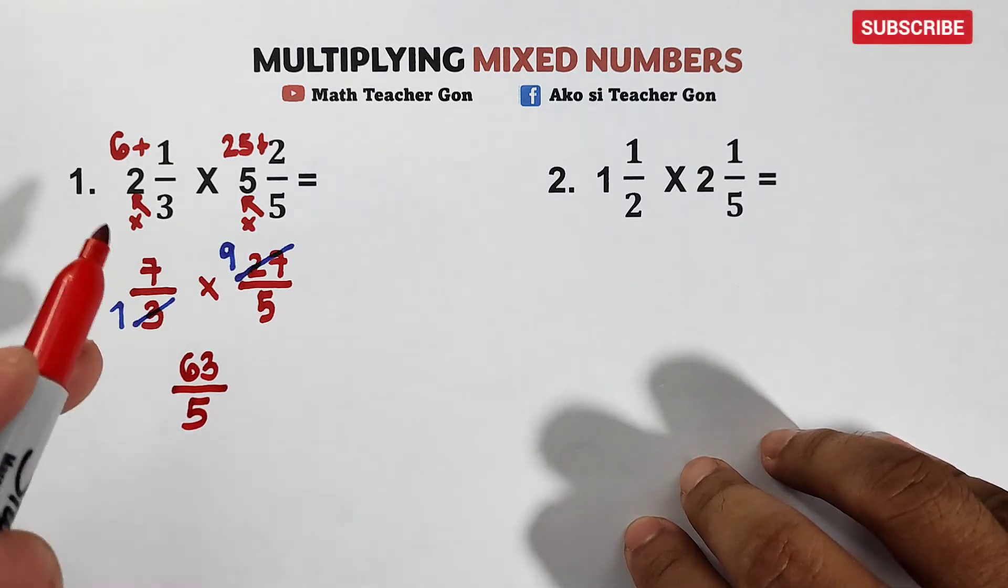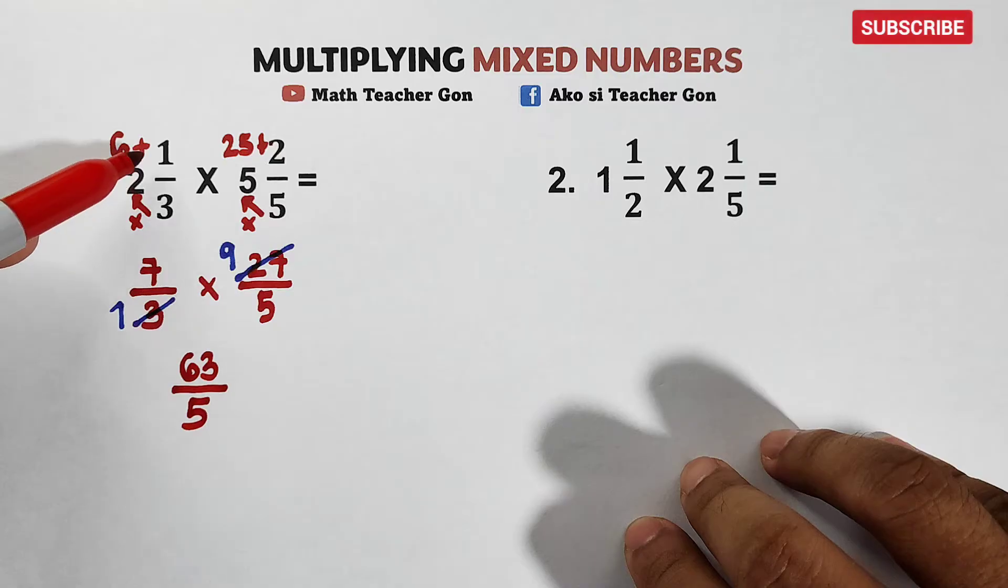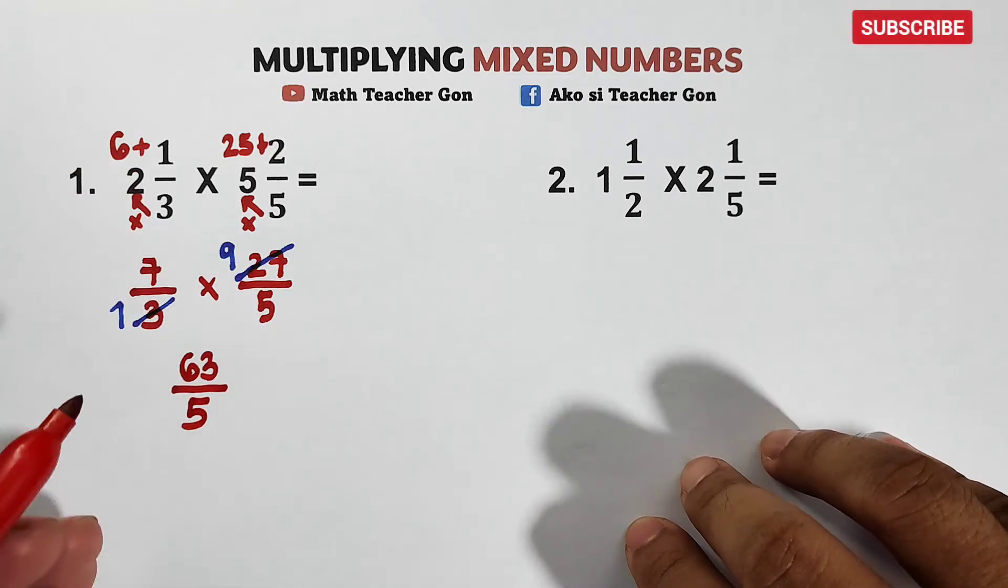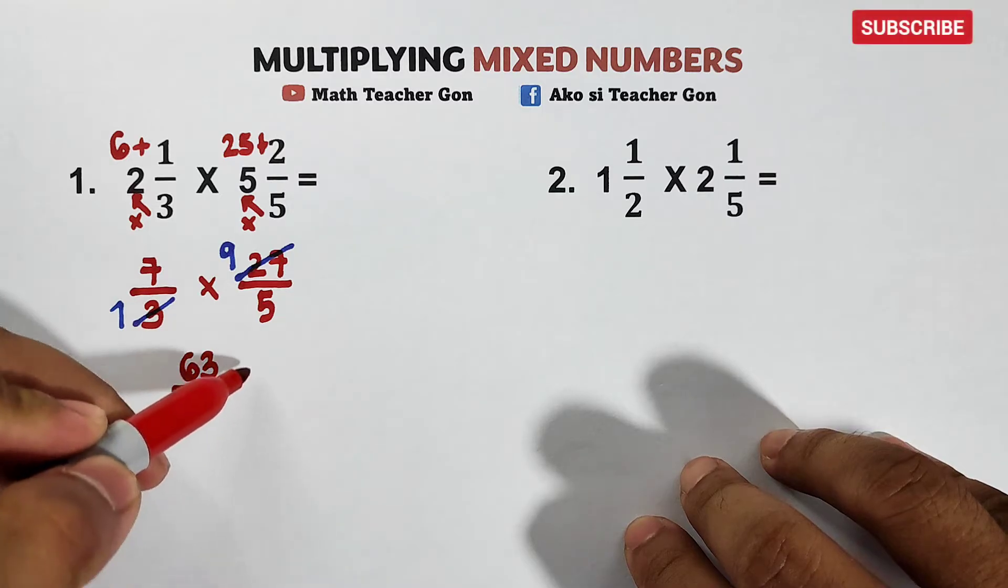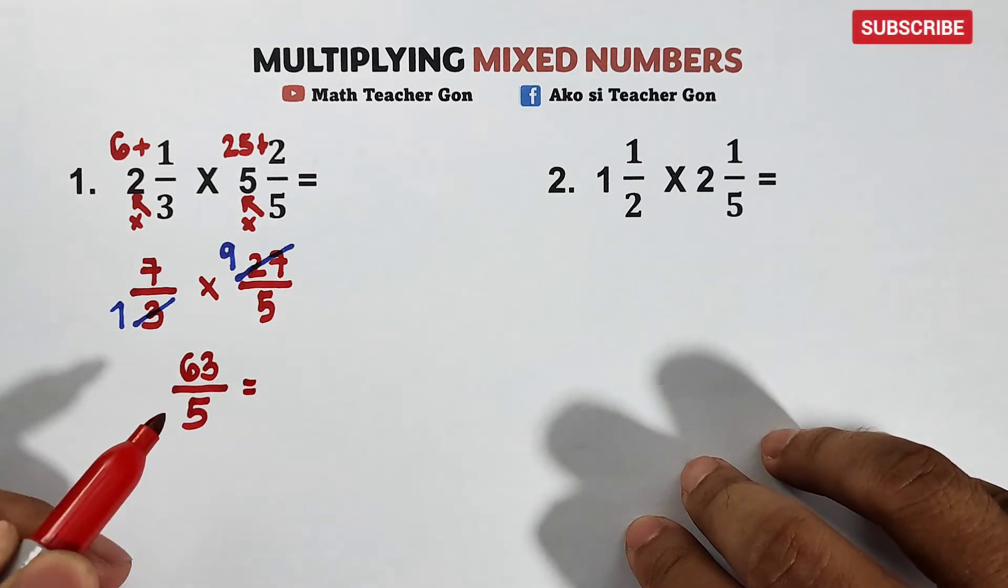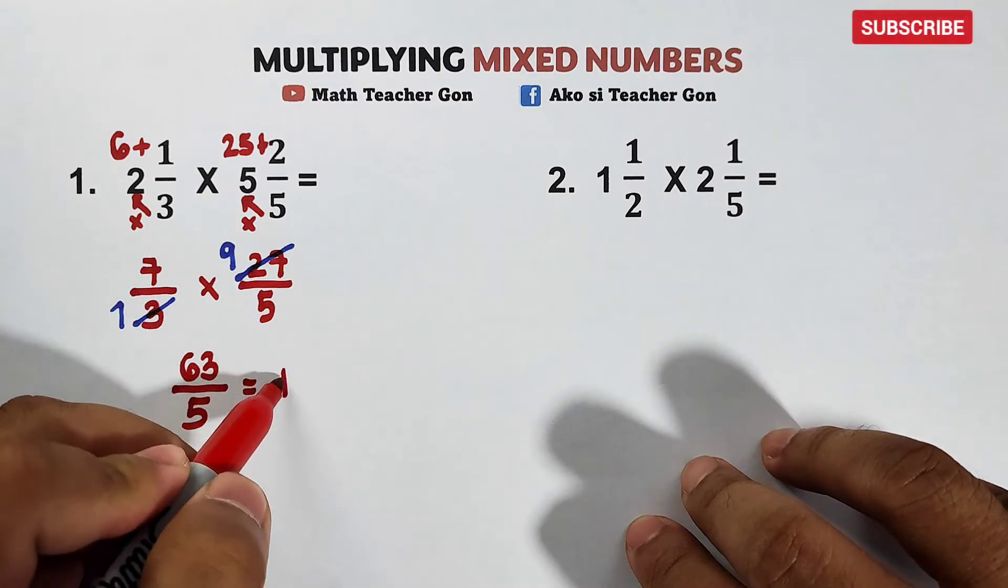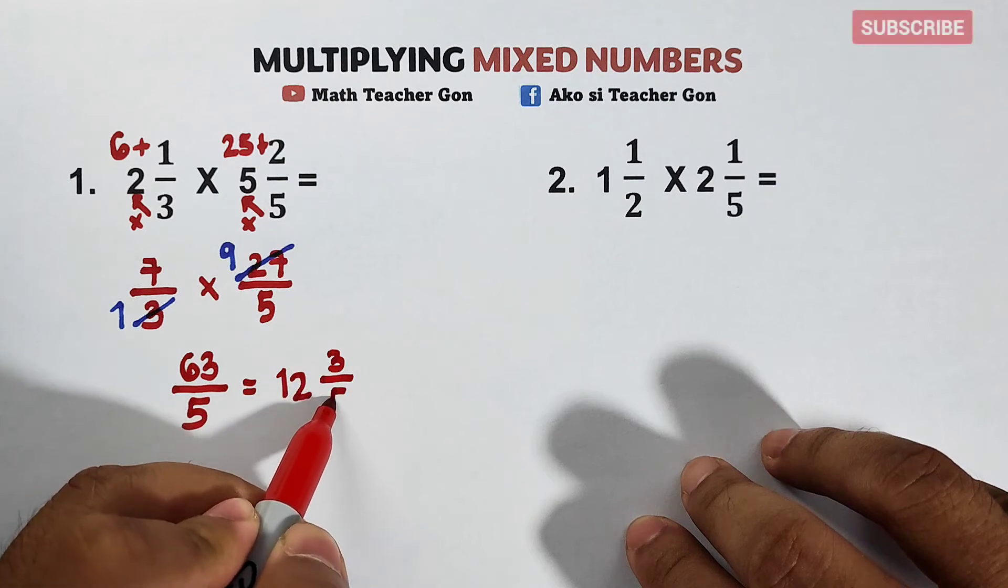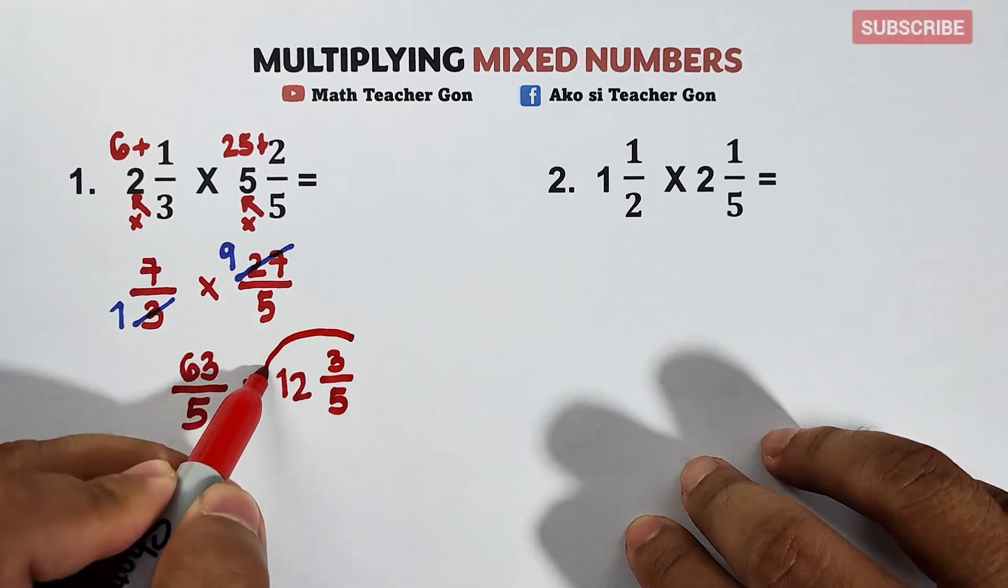Now, the final step here after converting from mixed number to improper, multiplying the improper fractions, you need to convert this into mixed number. This number, this one is equivalent to how many? 12 and 3 over 5. This is the answer, guys.